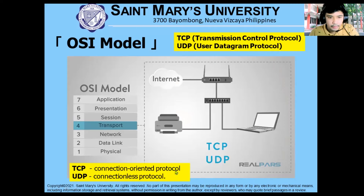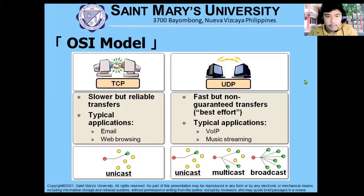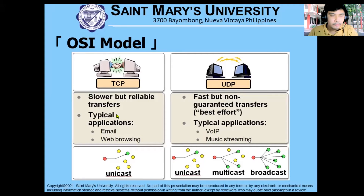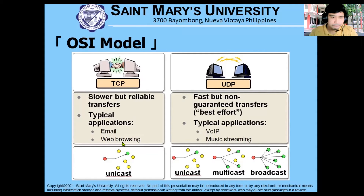TCP is a connection-oriented protocol and UDP is a connectionless protocol. To better understand the difference between TCP and UDP under our transport layer: TCP is slower but reliable in transfers. Typical applications would be email and web browsing, and it uses unicast communication.